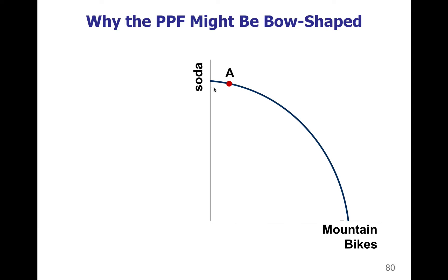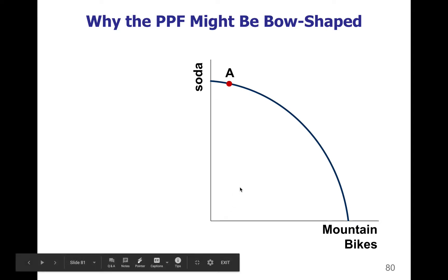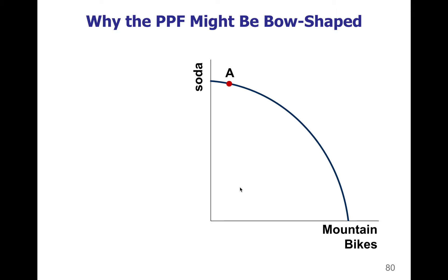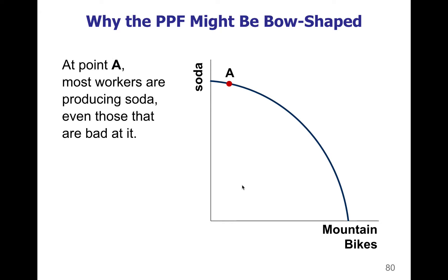Almost all of our workers and resources are making soda, and we're making a little bit of mountain bike. If we want to make more mountain bikes and shift some workers away from soda, which workers do you pick? Hopefully you said the worst workers, because you want to keep your most efficient soda workers on soda — they produce a ton of soda per hour worked. Your less efficient workers might be good at mountain bikes, so by removing them from soda and shifting them to mountain bikes, you're not giving up a whole lot of soda production.